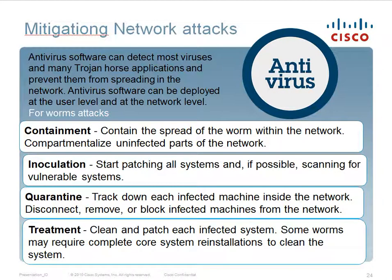Mitigating network attacks: antivirus software can detect most viruses and many Trojan horse applications and prevent them from spreading in the network, and can be deployed at the user level and the network level. For worm attacks, the steps are: containment — contain the spread of the worm and compartmentalize uninfected parts of the network; inoculation — start patching all systems and scanning for vulnerable systems; quarantine — track down each infected machine, then disconnect, remove, or block infected machines from the network; treatment — clean and patch each infected system, as some worms may require complete OS reinstallation.